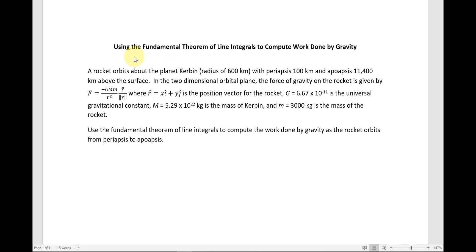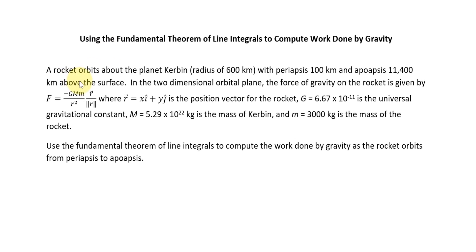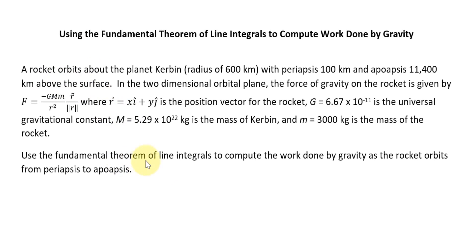In this video, we'll be using the fundamental theorem of line integrals to compute work done by gravity. The question says a rocket orbits about the planet Carbon with a radius of 600 kilometers, with a periapsis of 100 kilometers and an apoapsis of 11,400 kilometers above the surface.